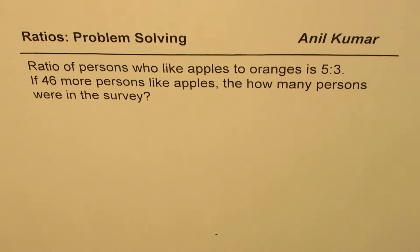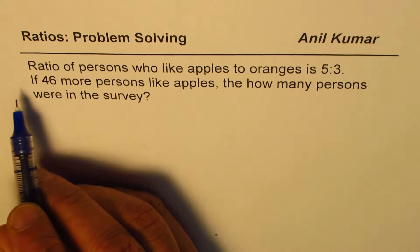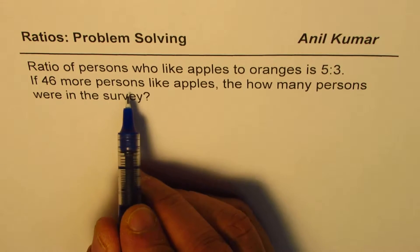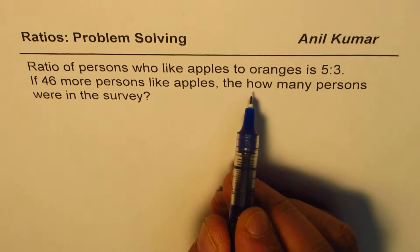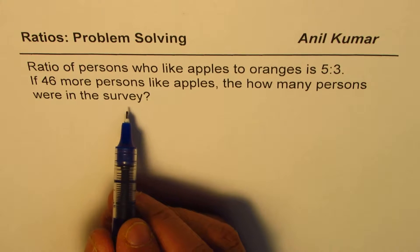The question here is: ratio of persons who like apples to oranges is 5 is to 3. If 46 more persons like apples, then how many persons were in the survey? Excellent question. Now let me answer this in two different ways.